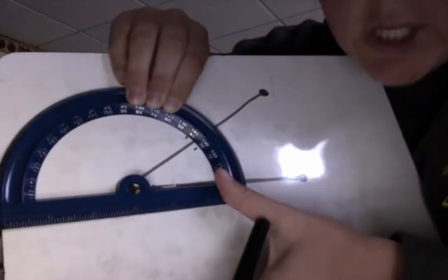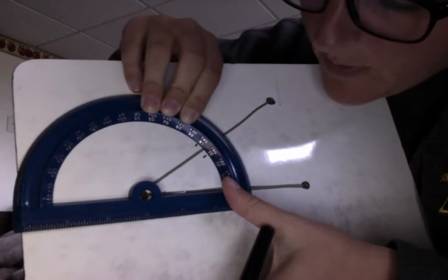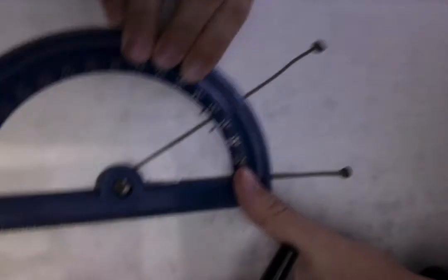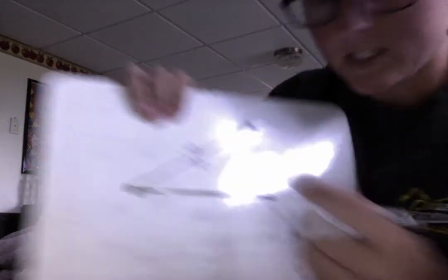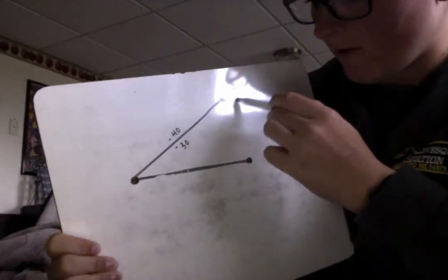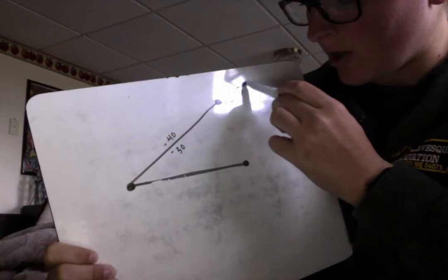So it looks like this angle is gonna be halfway between 30 and 40 and obviously you guys know that if 30 is here and 40 is here halfway in between it's gonna be 35. So this angle is gonna be 35 degrees.